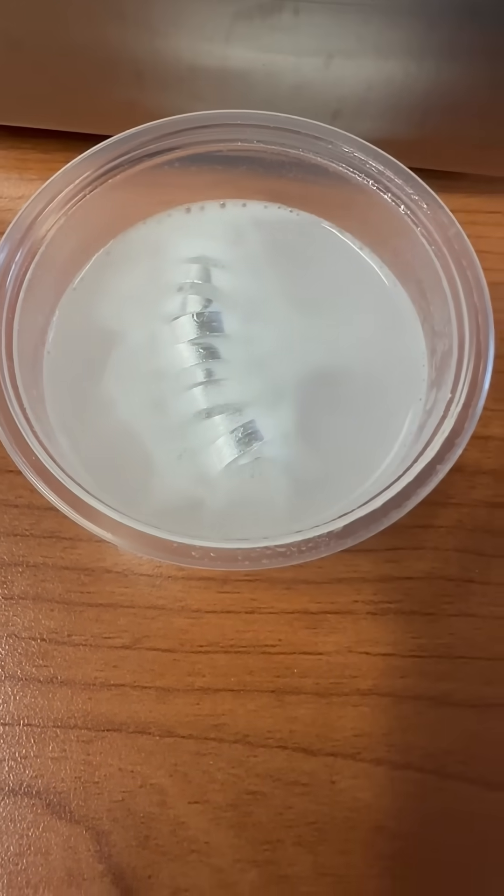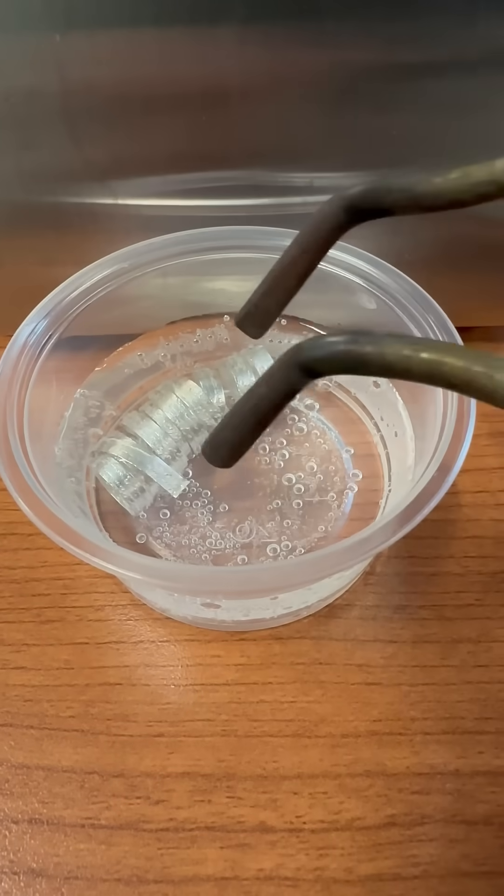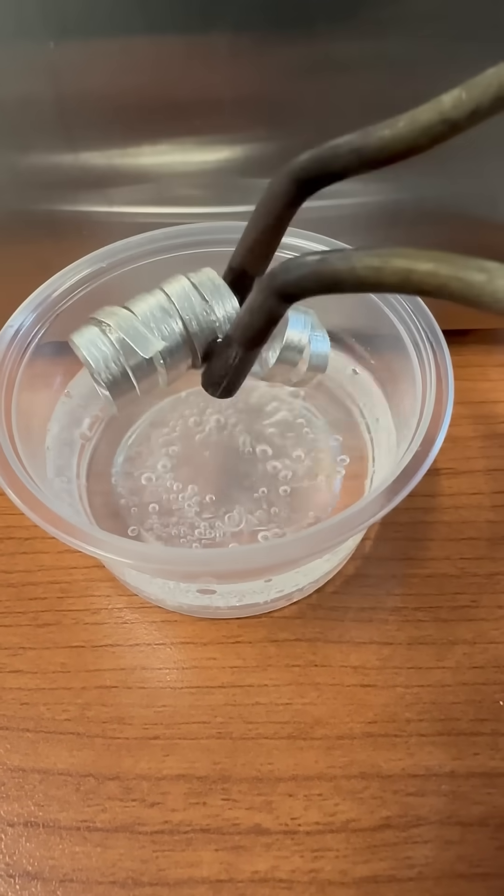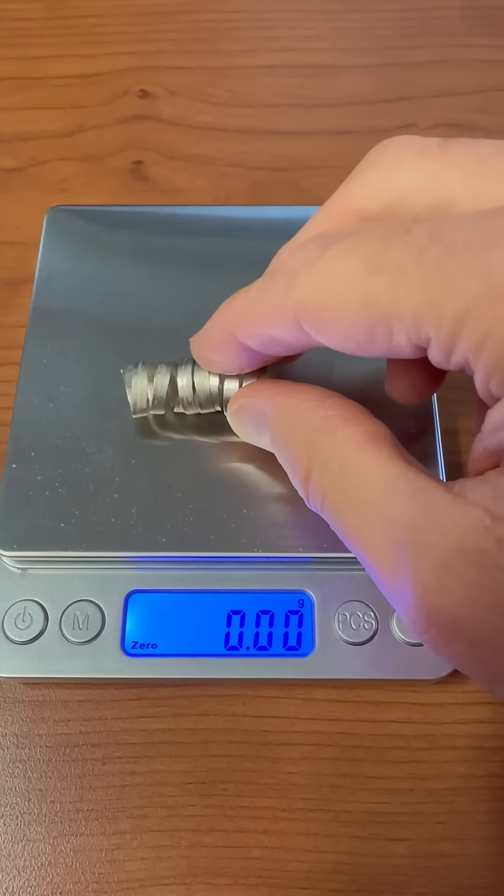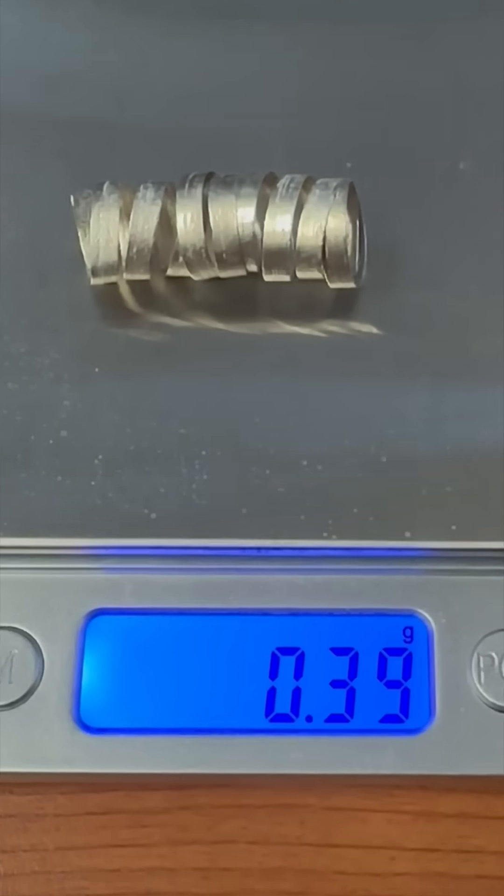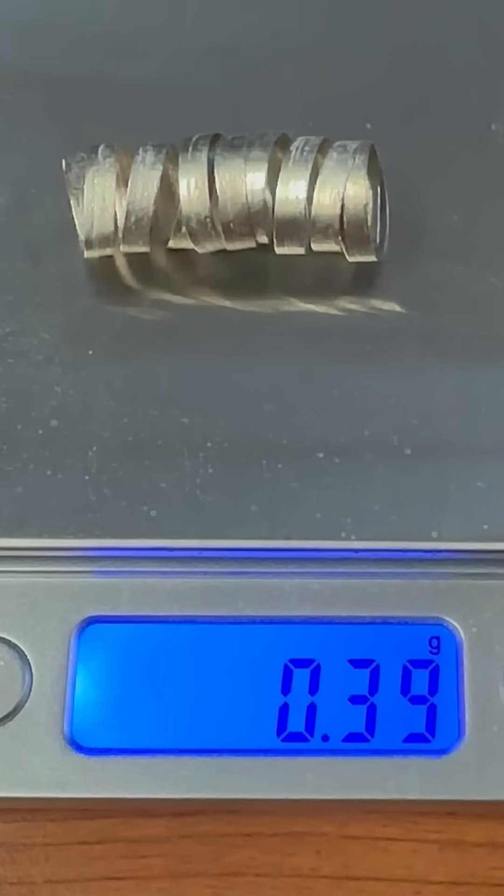The reaction continued for about 15 minutes, and when it was finally completed, there was some magnesium left over. So this means magnesium is the reagent in excess, while the acetic acid in vinegar was the limiting reagent. As you can see, 0.39 grams of magnesium were left over.